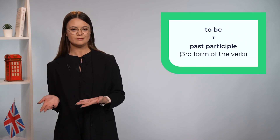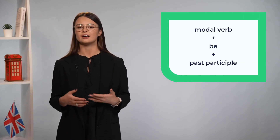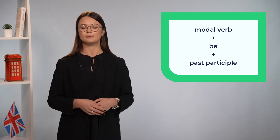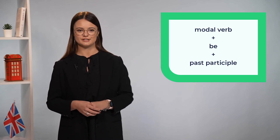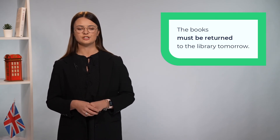Great job! Now let's revise some grammar rules. As you remember, the passive voice is formed by adding the correct form of the verb 'to be' to the past participle of the verb. With modal verbs the structure is very similar — we have a modal verb plus the word 'be' and the past participle. For example: the books must be returned to the library tomorrow. Are you ready to do an exercise?